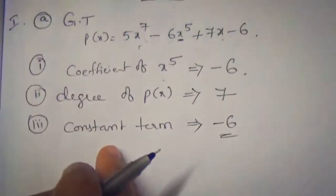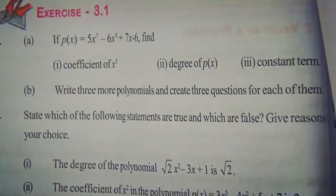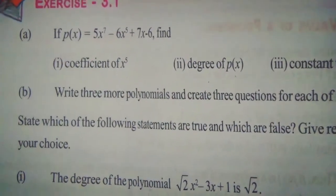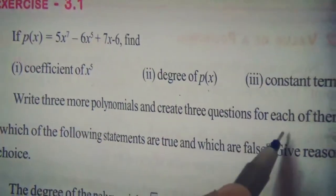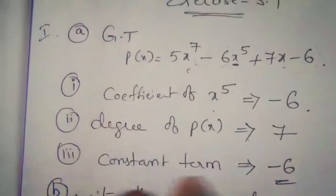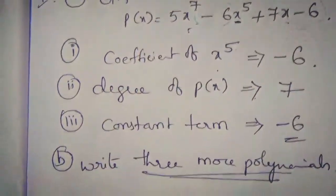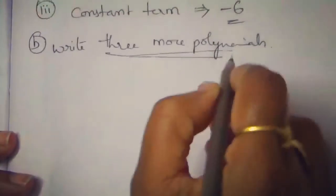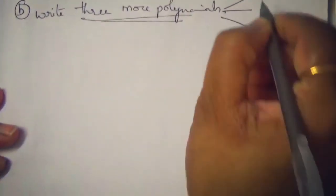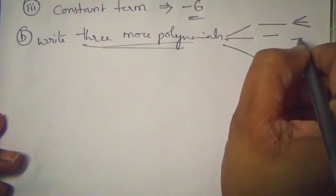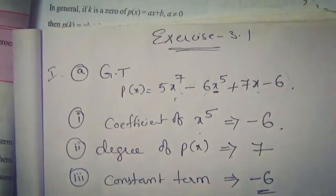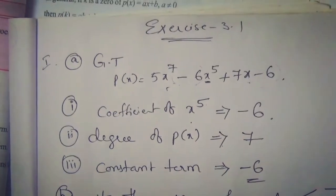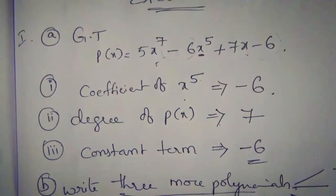Part (B) of the first roman: write 3 more polynomials and create 3 questions for each of them, just like the above — asking for the coefficient of a specific power, the degree, and the constant term. Try this on your own.